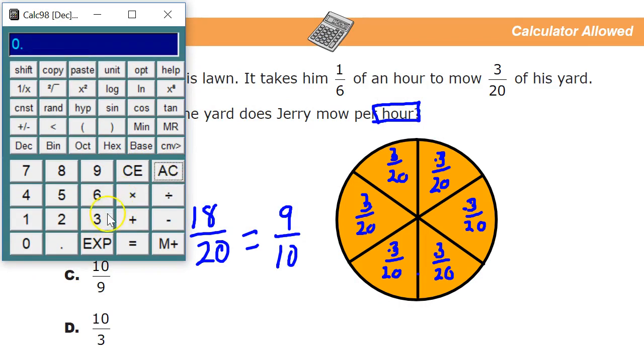I'm going to do three divided by twenty equals point one five, and then multiply that by six. And it gives me point nine, which is nine-tenths. Another thing I could do is three times six, and then divide that by twenty, and I get nine-tenths again.